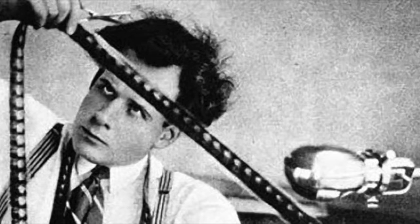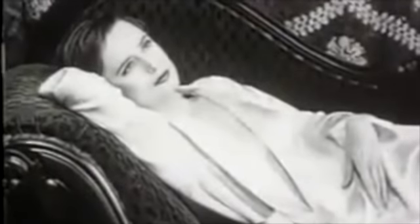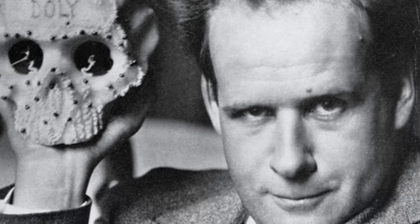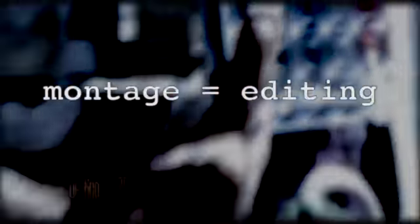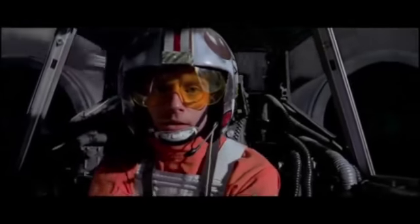Soviet filmmaker Sergei Eisenstein believed that montage was one of the most important aspects of film, because the structure of the montage enables the audience to gain meaning from the film. One very famous technical code used in structuralist film theory is the Kuleshov effect, which is the juxtaposition of shots that can alter the meaning the audience gains from a film. Eisenstein's theory was impactful in structuralist theory and film semiotics.